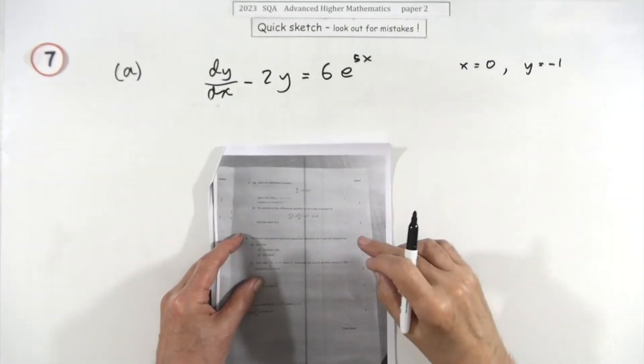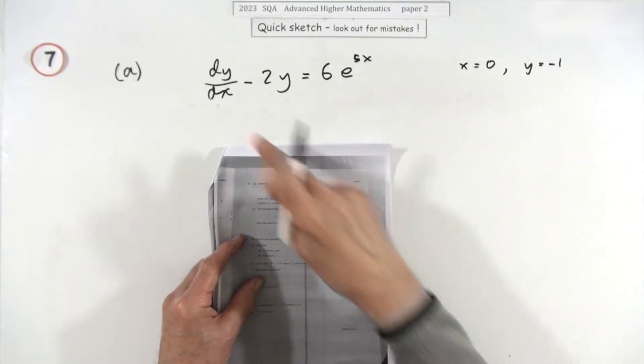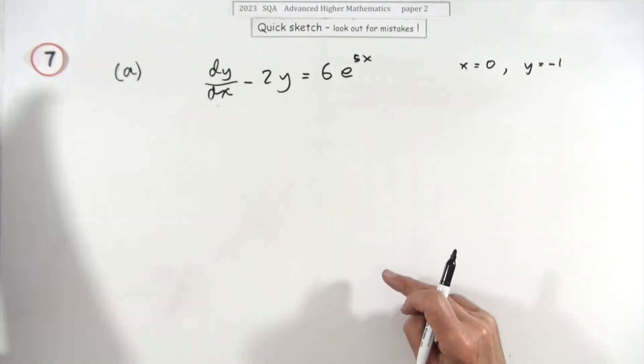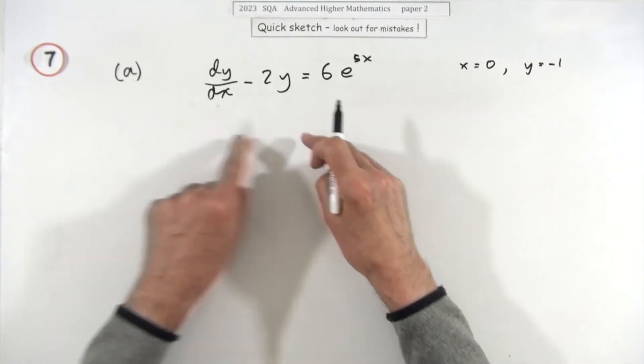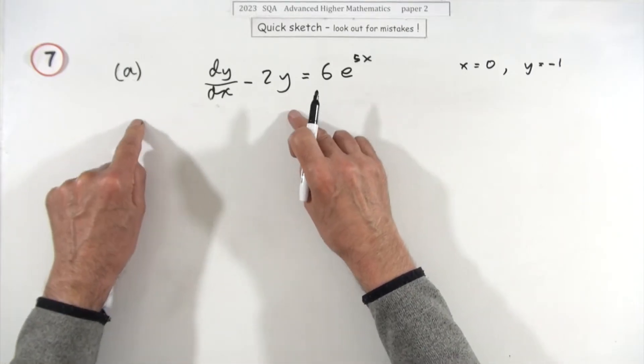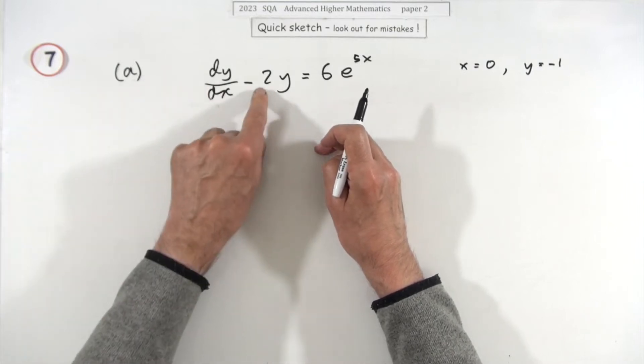Number seven from paper two, the 2023 Advanced Higher Maths. A differential equation, first order linear differential equation, six marks, given these initial conditions. What you're trying to do is reconstruct the exact derivative of a product because it's almost there. There's the y, there's the derivative, I don't have the x but I've got a bit of it still kicking out here, so you can reconstruct it from that if you just dig down.